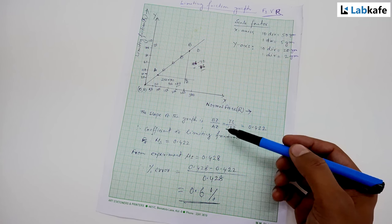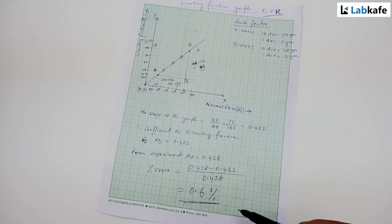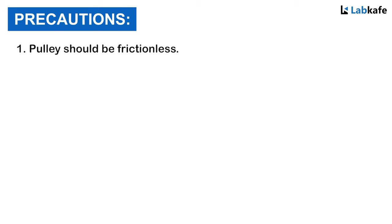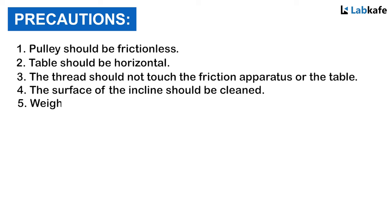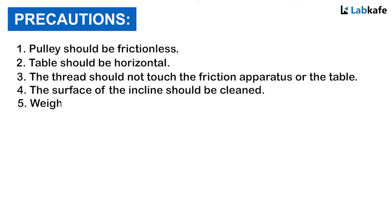Precautions: the pulley should be frictionless, the table should be horizontal, the thread should not touch the friction apparatus or the table, the surface of the friction apparatus should be cleaned, weights should be placed on the pan gently and in small steps, and in each step it should be tested whether the wooden block is just moving by gently tapping.